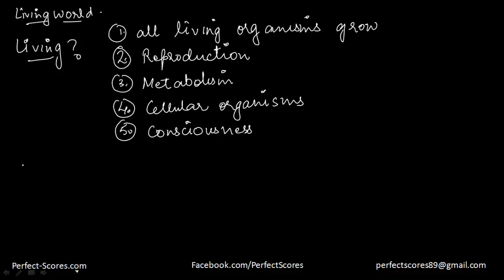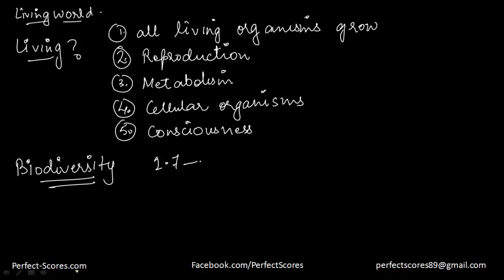The next thing you need to know is a term called biodiversity. As the name suggests, it is made up of two things: bio and diversity — meaning the number and types of organisms on the earth. The number of species that are known and described ranges from about 1.7 to 1.8 million. There are millions of other species we don't even know, and the sad thing is many of those species are getting extinct even before we come to know of them.